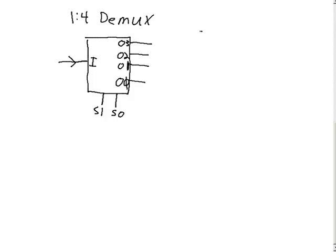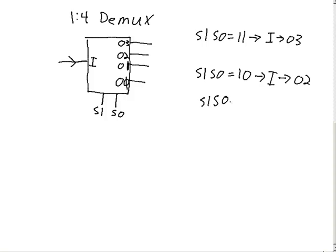So if S1 S0 equals one one, then I gets mapped to output three. If S1 S0 equals one zero, then I gets mapped to output two. If S1 S0 equals zero one, then I gets mapped to output one. And finally, if S1 S0 equals zero zero, then the input I gets mapped to output zero.